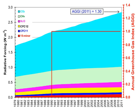Ice cores provide evidence for greenhouse gas concentration variations over the past 800,000 years. Both CO2 and CH4 vary between glacial and interglacial phases, and concentrations of these gases correlate strongly with temperature. A record from ice cores indicates CO2 mole fractions stayed within a range of 180 ppm to 280 ppm throughout the last 800,000 years, until the increase of the last 250 years.